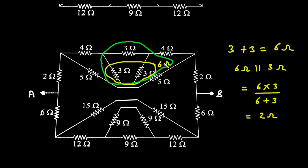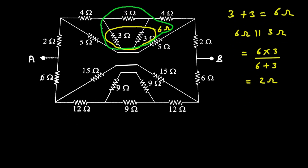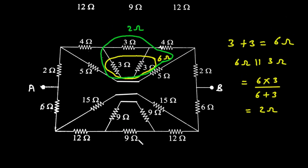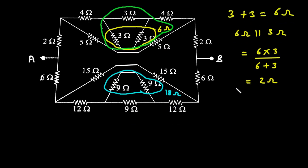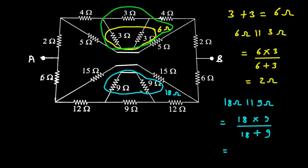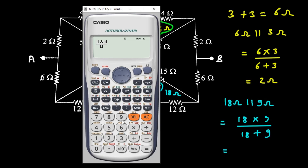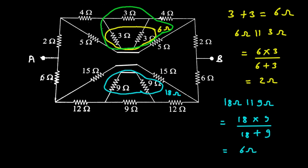This is now 2 ohm. Now this 4 ohm, 2 ohm and 4 ohm are connected in series. Before solving that, we will first solve: 9 ohm and 9 ohm connected in series gives 18 ohm, and 18 ohm in parallel with 9 ohm gives 18 into 9 divided by 18 plus 9, which is simply 6 ohm.